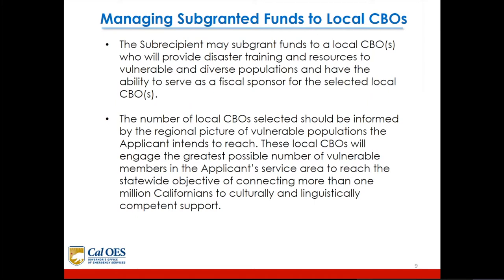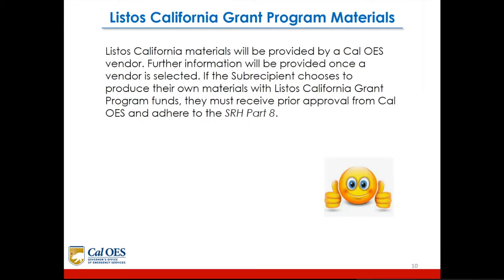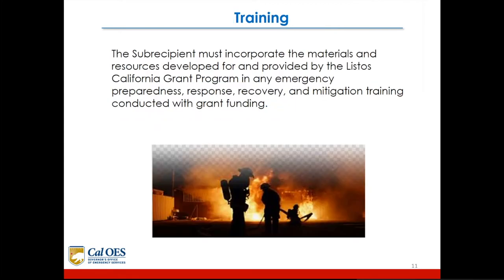These local CBOs will engage the greatest possible number of vulnerable members in the applicant service area, to reach the statewide objective of connecting more than 1 million Californians to culturally and linguistically competent support. Listos California materials will be provided by a CalOES vendor. If the subrecipient chooses to produce their own materials with Listos California grant program funds, they must receive prior approval from CalOES and adhere to the subrecipient handbook part 8. The subrecipient must incorporate the materials and resources provided by the Listos California grant program in any emergency preparedness training conducted with grant funding.